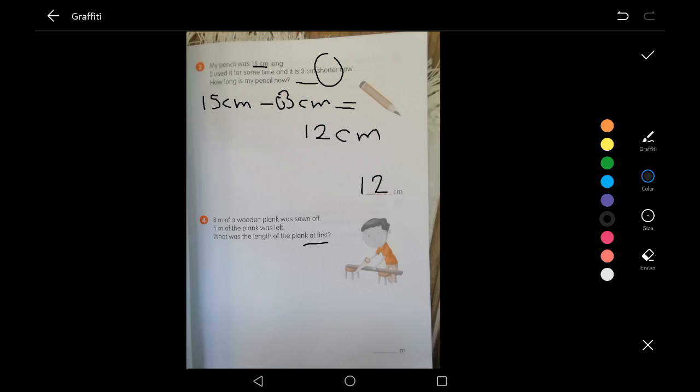So here they cut, they took from the wooden blank 8 meters. And the left was 5 meters. So together, the question is asking us at first, together, before we cut it, how long was it? What is the length of it? So what should we do? Should we add or subtract?